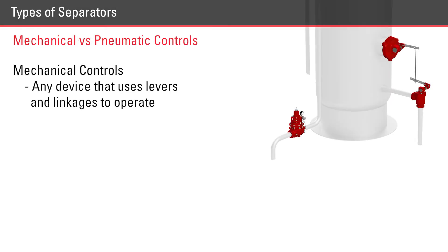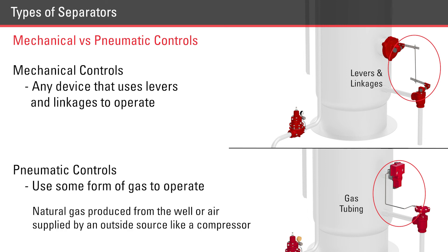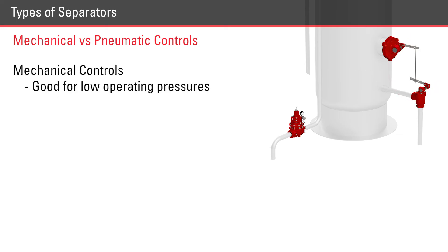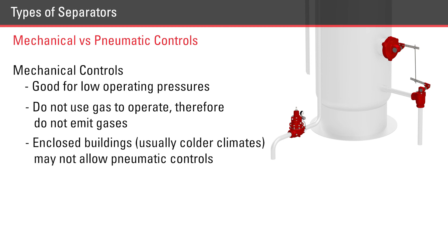We define mechanical controls as any device that uses levers and linkages to operate. Pneumatic controls use some form of gas to operate and control — these gases can be natural gas produced from the well or air supplied by an outside source like a compressor. If the operating pressure is low enough, mechanical controls are a great choice. Some regulatory agencies tightly control fugitive gas emissions, and mechanical valves don't use gas to operate, so they don't emit gas under normal operation. Enclosed buildings, usually found in colder climates, may not allow pneumatic controls to be used for safety reasons.